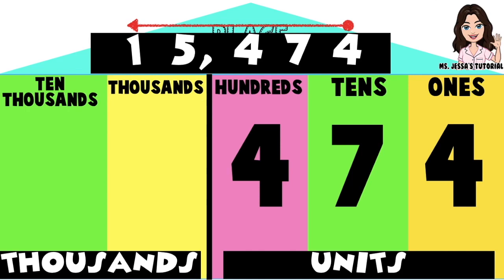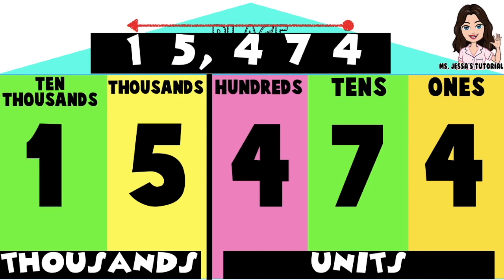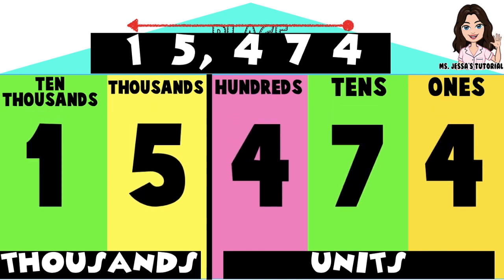Then next is digit 5. Digit 5 is in the thousands place. And lastly, digit 1 is in the tens thousands place. So these are the place values of the digits in 15,474.